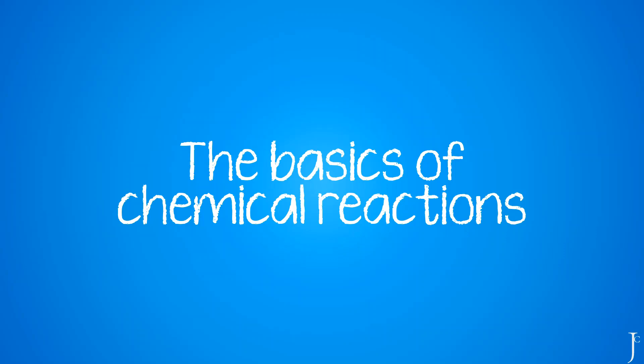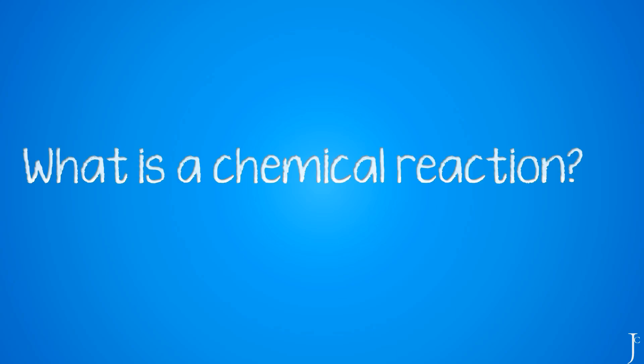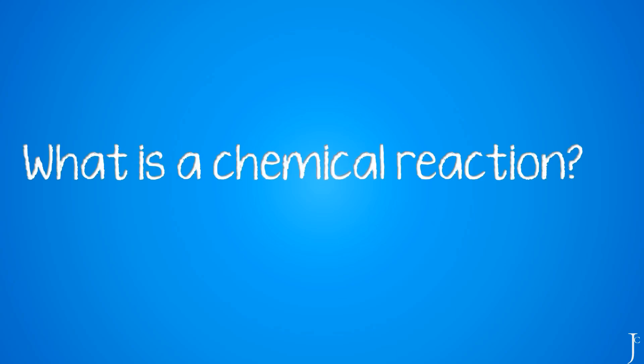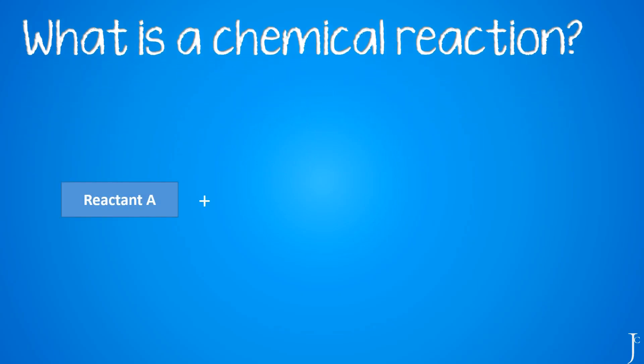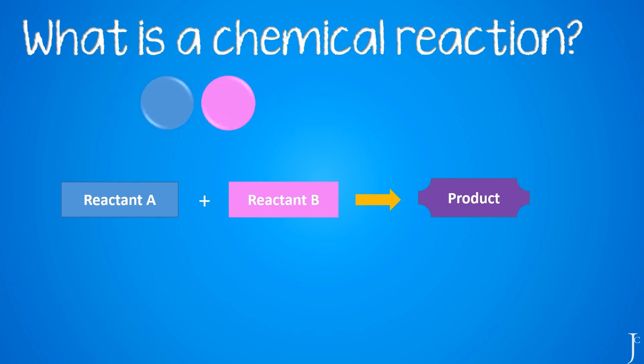Hi everyone, today we're going to be learning the basics of chemical reactions. A chemical reaction is when you have two reactants that form a new substance called the product. They form this product by colliding in the correct orientation and with enough energy to form the new substance.